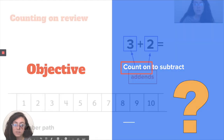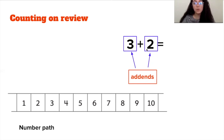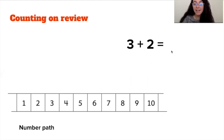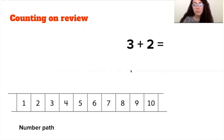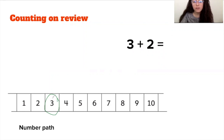What does it mean to count on? Let's review. When we have a problem like three plus two equals, we usually know that we have add-ins — three and two. These are the numbers that we're adding together. Our add-ins three and two are going to help us find our whole, our total. We start on our number path, circle three, and then count on two more: one, two. Our answer is five. The counting on strategy helps us find our total.